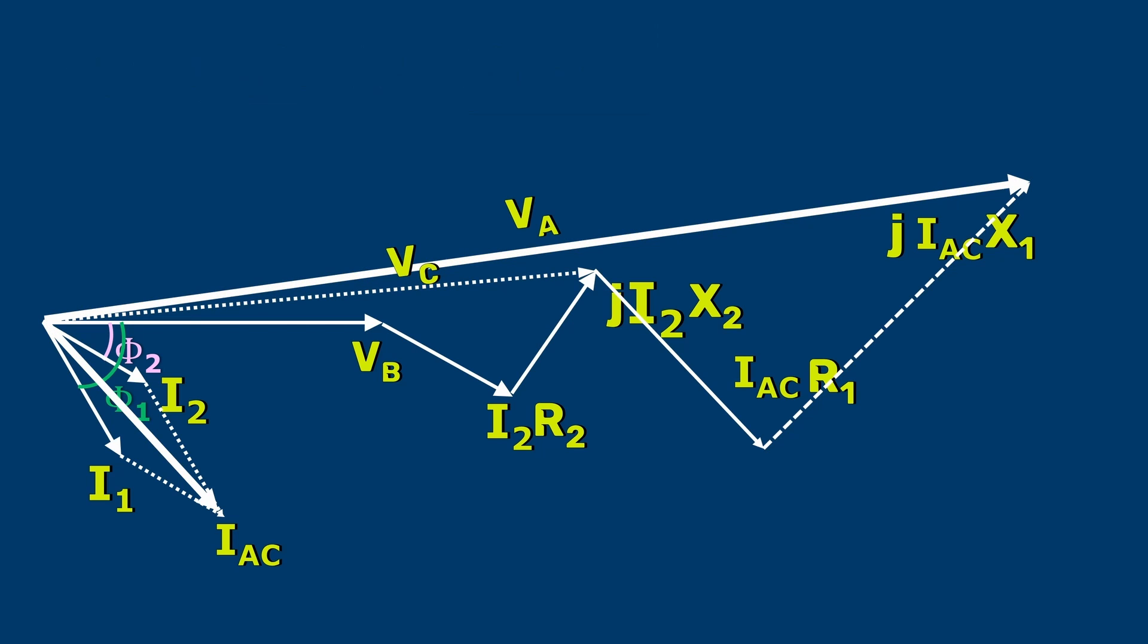That's all. The vector diagram is done. Now, we know the sending end voltage VA and the sending end current IAC. This angle represents the phase difference between the sending end voltage and current.